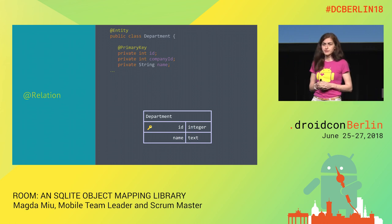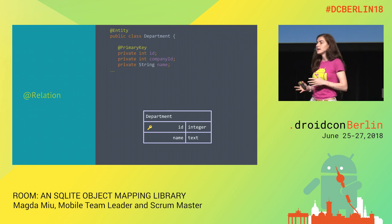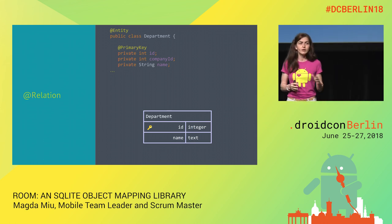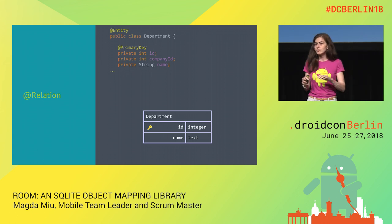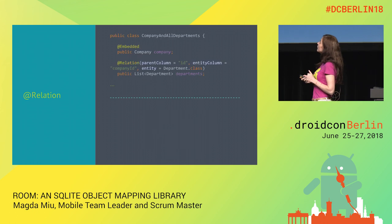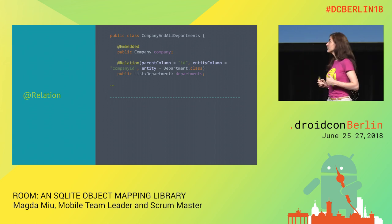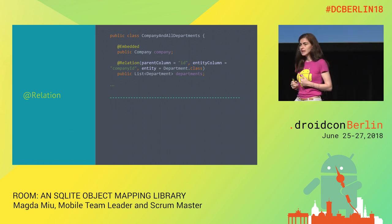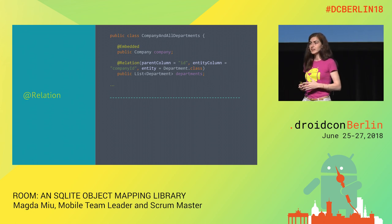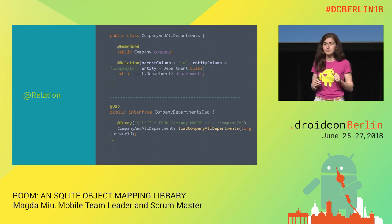Another way to handle relationships in Room is using the @Relation annotation. Say our company has many departments and we want to get all departments for a company using the company ID without a foreign key. The solution is to create a POJO combining the Company entity with a list of departments — we @Embed the company entity and annotate the list of departments with @Relation. The @Relation annotation should only be used for a field that is a List or a Set. We then create a DAO that queries the fields separately.